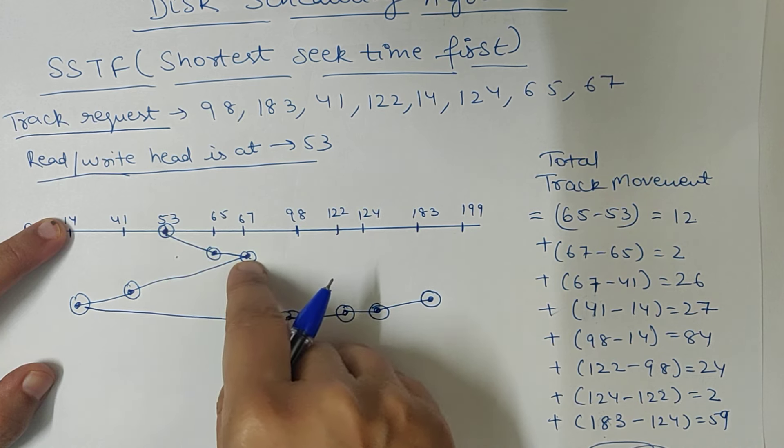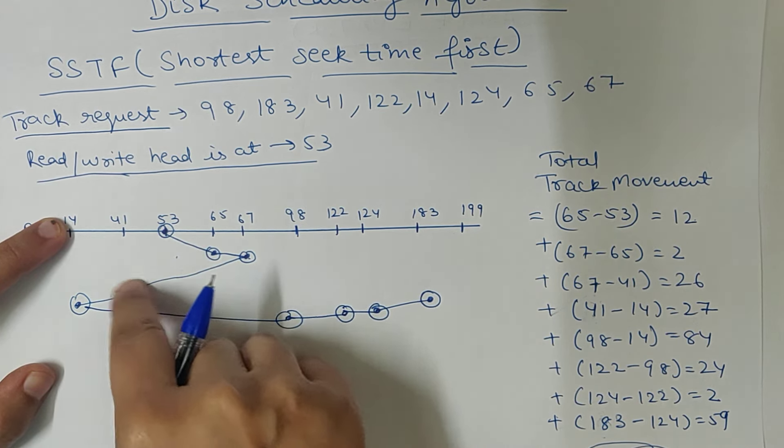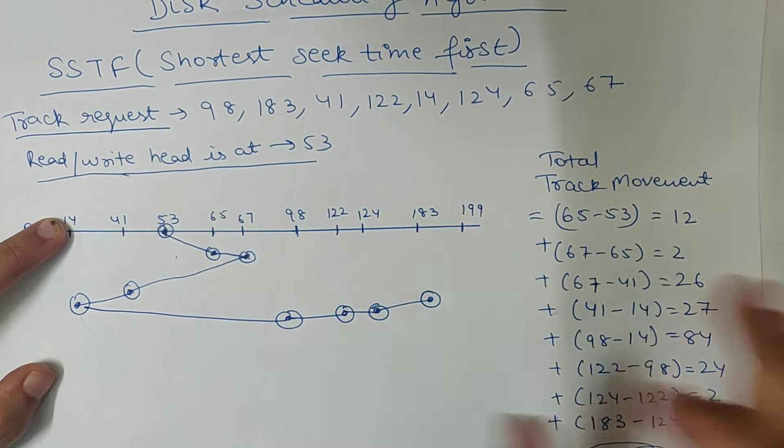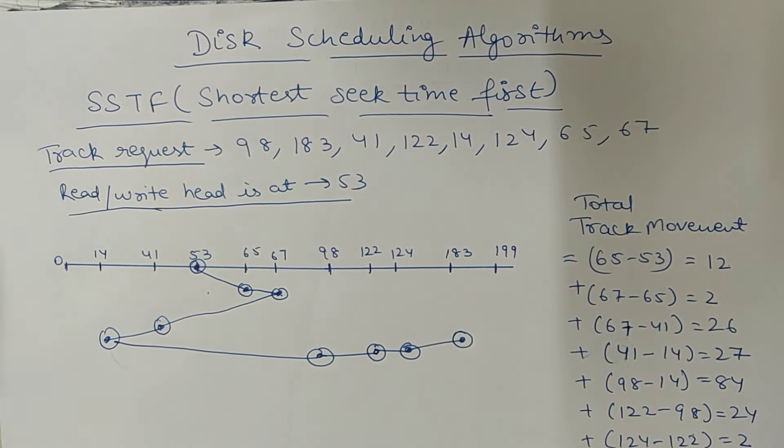65, 67. Then, who is near? Then, the time is less. So, this is SSTF. I hope you understand this example. Thank you so much, everyone.